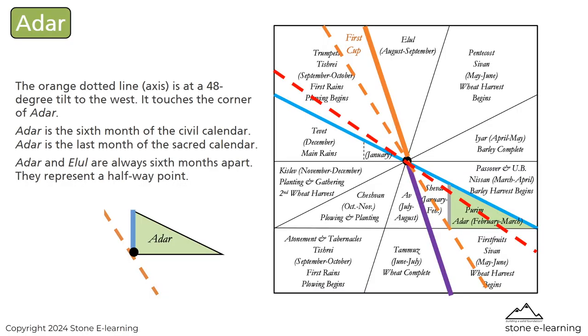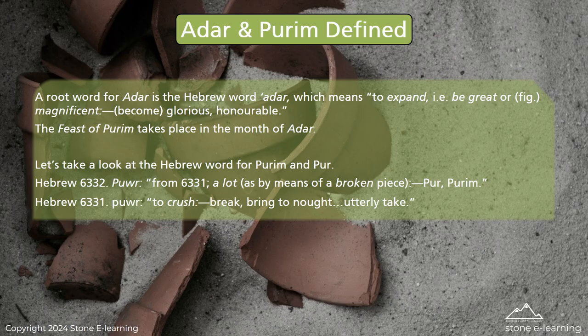The orange dotted line axis is at a 48-degree tilt to the west and touches the corner of Adar. Adar is the sixth month of the civil calendar and the last month of the sacred calendar. Adar and Elul are always six months apart — they represent a halfway point. A root word for Adar means 'to expand, be great, magnificent, become glorious, honorable.' The feast of Purim takes place in the month of Adar.